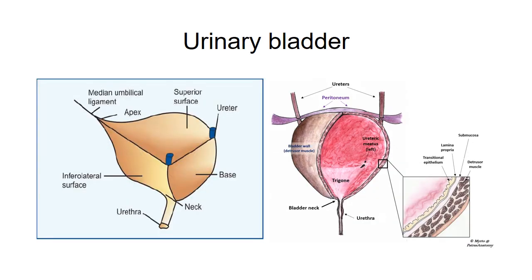This picture shows the urinary bladder. There is an apex directed upwards towards the umbilicus, a base directed backwards, and a neck which is the lowest and most fixed part of the bladder. The second picture shows the trigone, a small triangular area over the lower part of the base of the bladder. The two upper lateral openings are from the bilateral ureters, and the single lower opening is the urethral orifice.